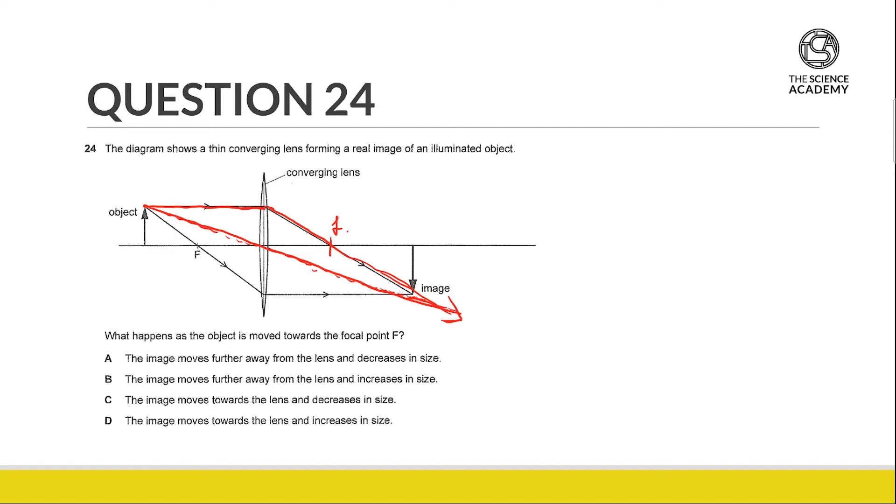So we already know that this particular lens has a focal point at this point over here. Let's not clutter this particular image too much. The question says that the object is moved towards the focal point F.